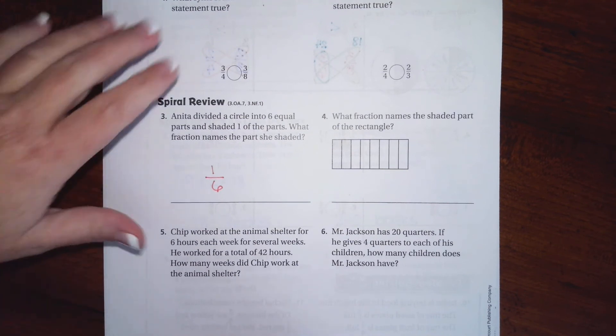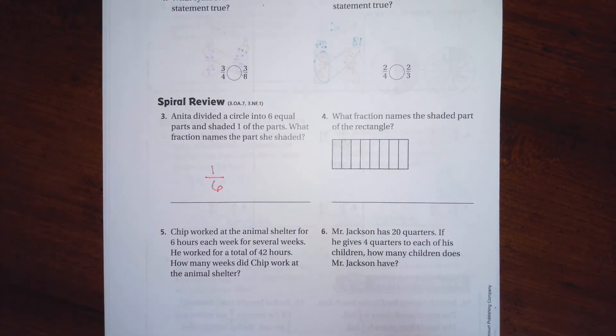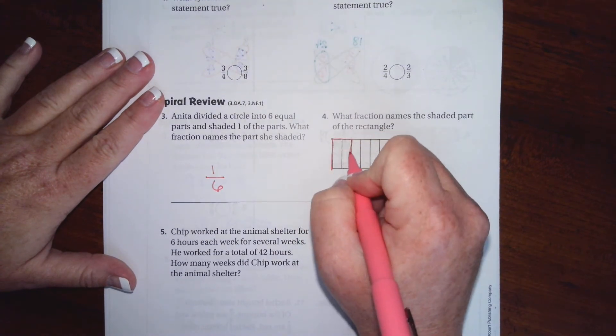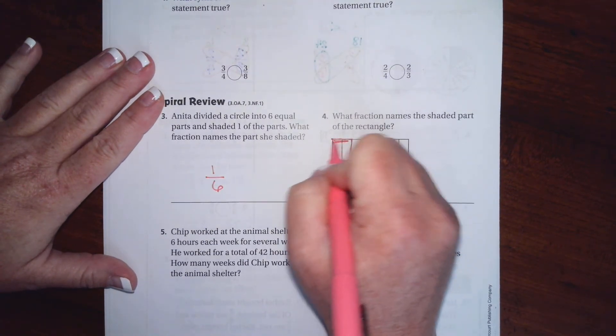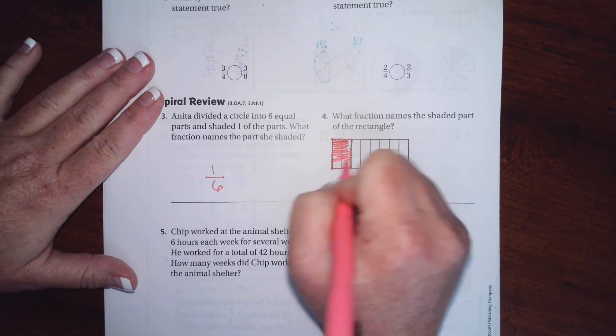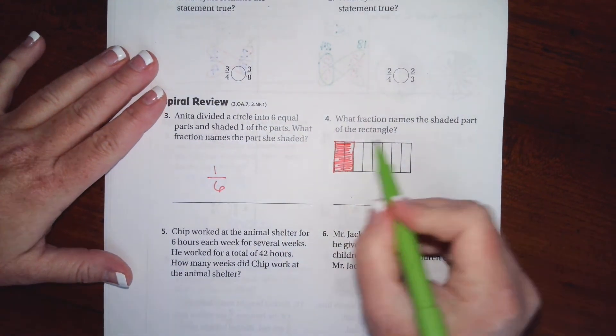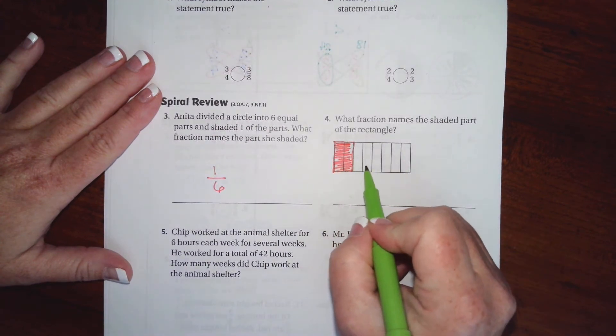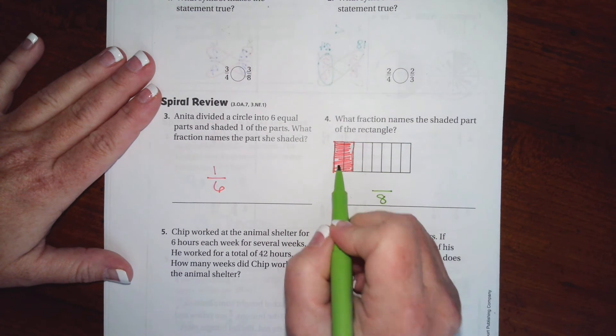Don't make it harder than it's got to be. Now I know that this one is super hard for you guys to see, so I'm going to go ahead and color it in really fast. What fraction names the shaded part of the rectangle? Well, we have one, two, three, four, five, six, seven, eight. So the denominator is eight, and there's one, two - two that are shaded. That's it guys.